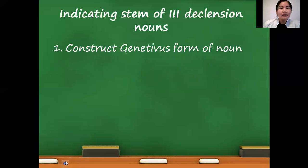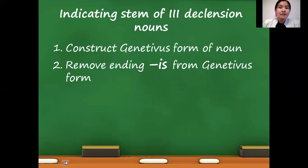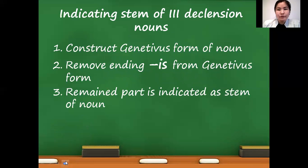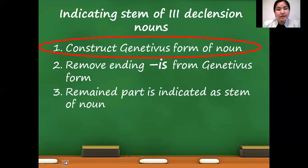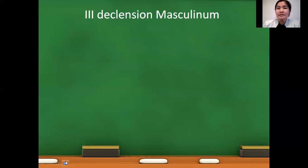Because we need to indicate the stem of third declension nouns today, the steps are as follows: first, you need to construct the genitive form of the noun; then remove the ending '-is'; and the remaining part will be the stem. Let's revise how to construct the genitive form.